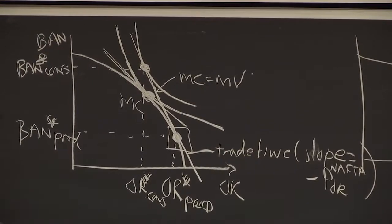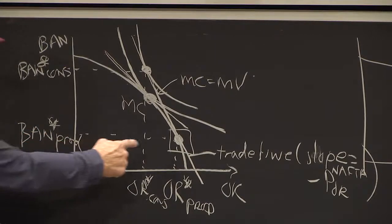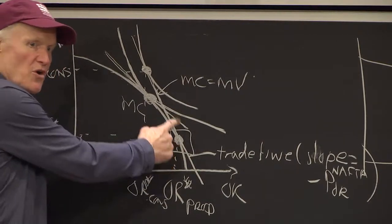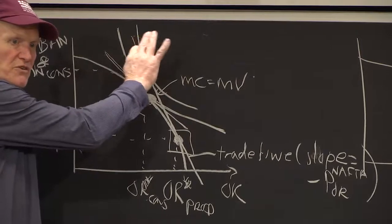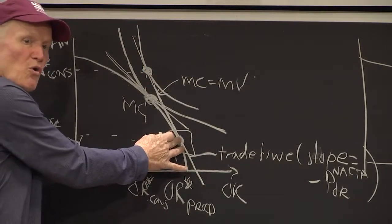And what allows me to think of this as a theory of the firm is I don't have to know who this guy is to know he's going to pick that point. That is, regardless of what indifference curves this fellow has, he's always going to want to produce here, no matter who owns it.